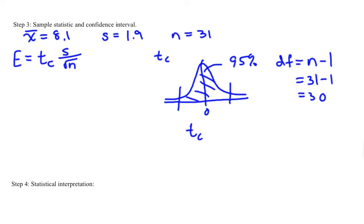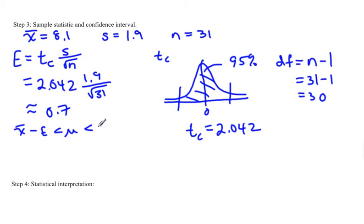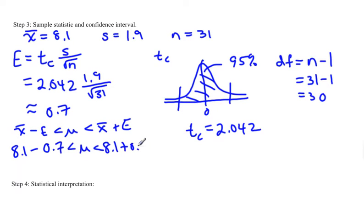So t sub c is 2.042. Now we can calculate e: e equals 2.042 times 1.9 over the square root of 31. Using a calculator, e is approximately 0.7. The confidence interval is x-bar minus e to x-bar plus e, which gives us 8.1 minus 0.7 to 8.1 plus 0.7, so 7.4 is less than mu is less than 8.8.